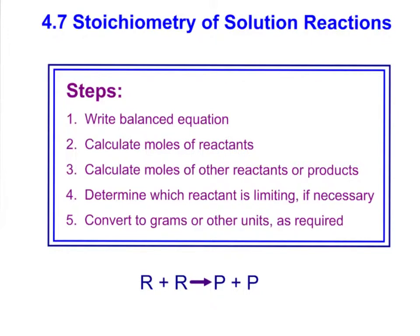So first, I just wrote out the steps to remind you. When we approach these problems, we want to always make sure we have a balanced equation. Some of you forgot to do that sometimes with the last problems, and if you don't have a balanced equation, you have no idea what's going on. You do not know mole-to-mole ratios at all between products and reactants, so you have to start out with writing the balanced chemical equation.